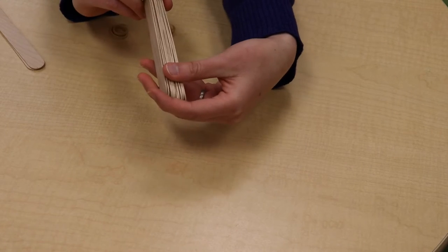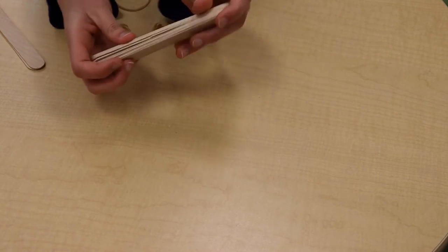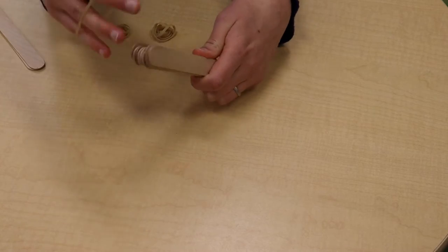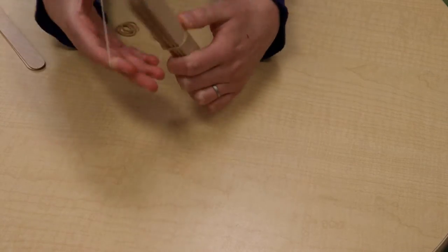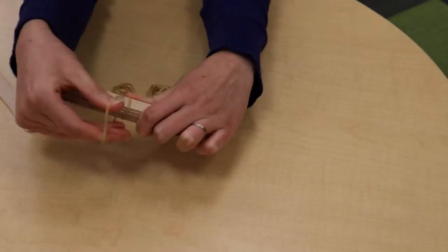So we're going to start with about 10 popsicle sticks or craft sticks, and we are just going to bundle them together and rubber band them in the center. So just tie it around a few times.